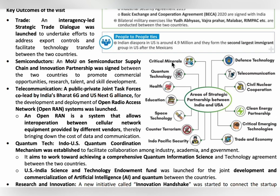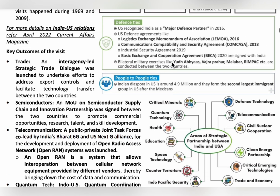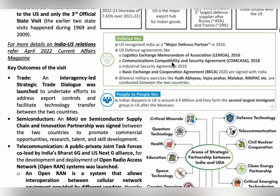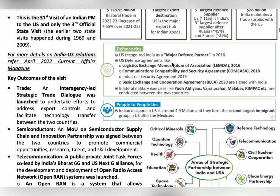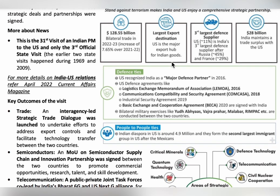Around 4.9 million Indians live in the US. In fact, Indians are the second largest immigrant group in the US after the Mexicans. In 2022–23, around 128.55 billion dollars of trade took place between India and the US, with the majority of Indian goods exported to the US. For India, the US is the largest export destination.